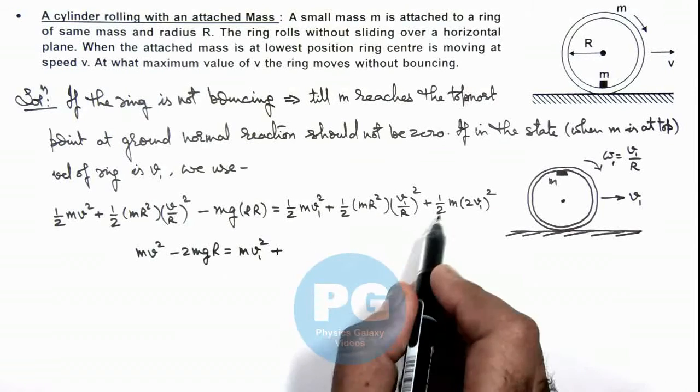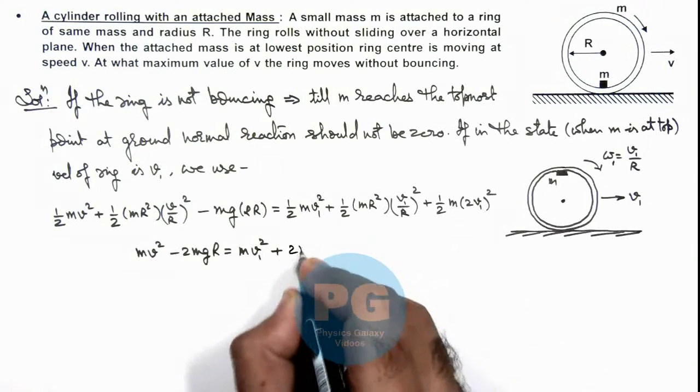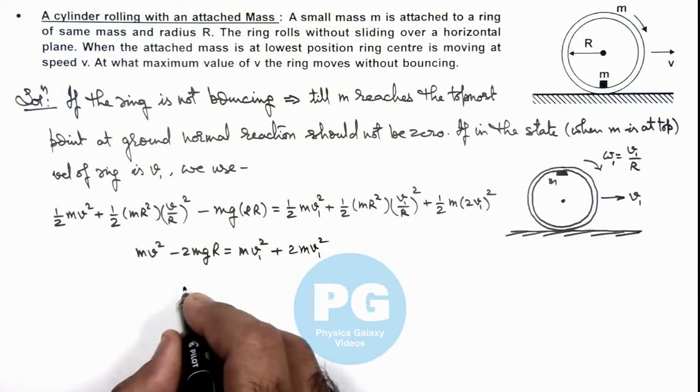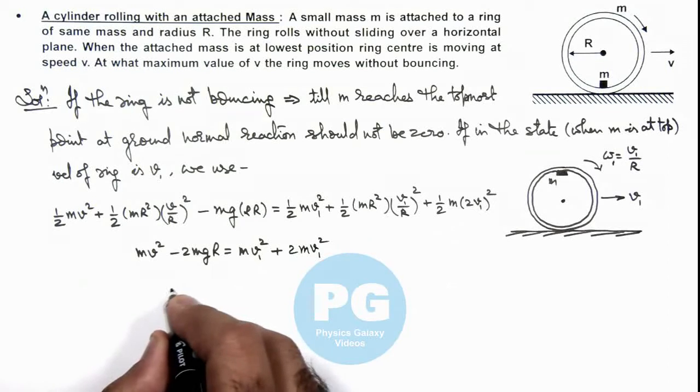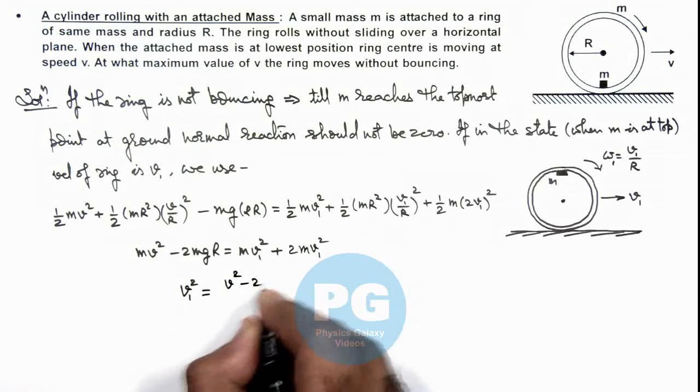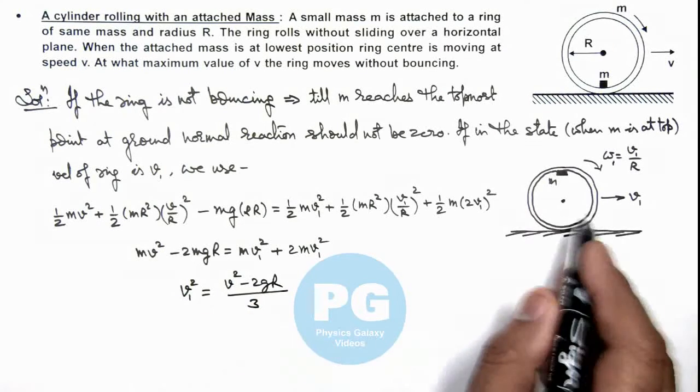This will be here you can see this is also 2m v1 square, so this is 2m v1 square. Now in this term if we calculate the value of v1 square, this gives us v square minus 2gR divided by 3. So we have got the value of speed.